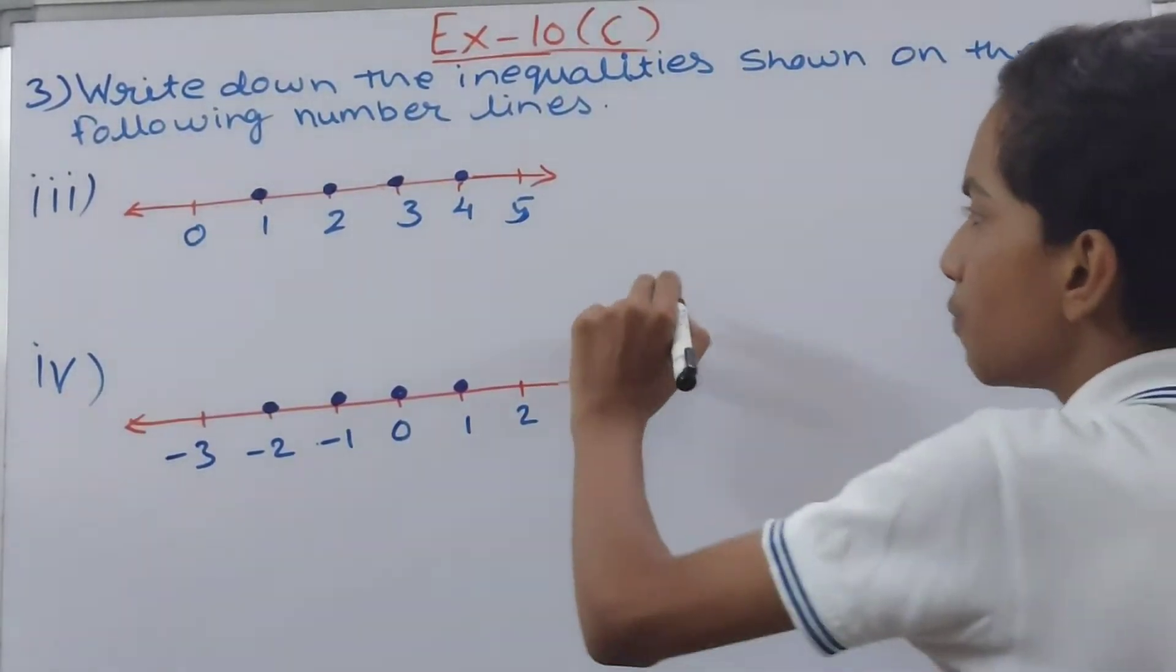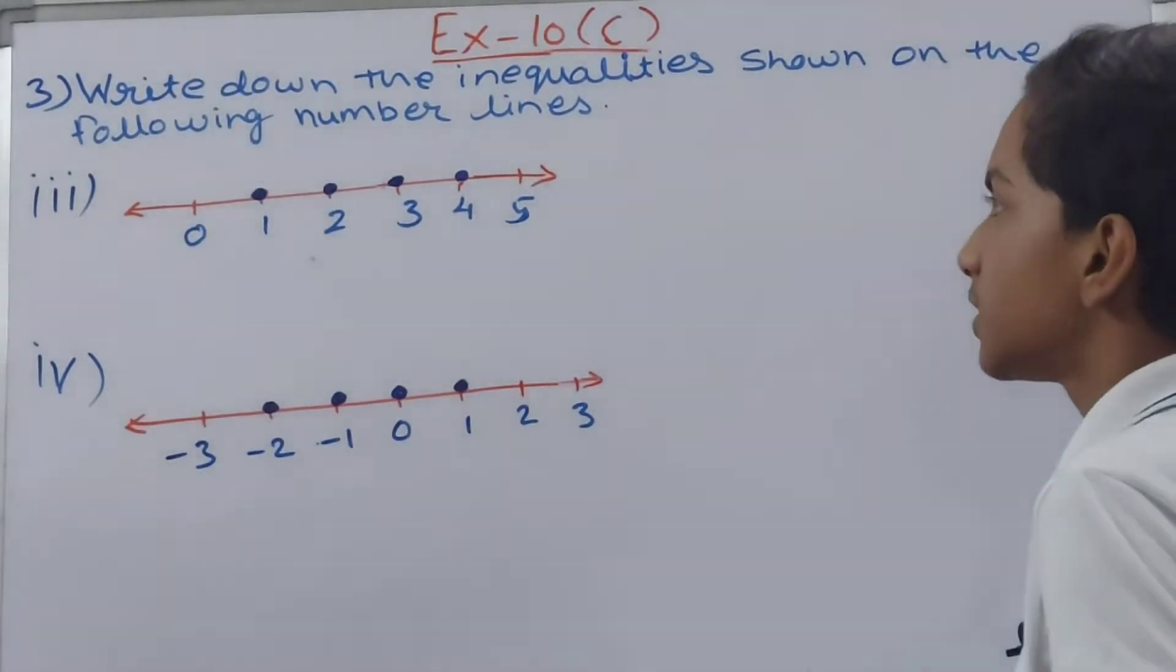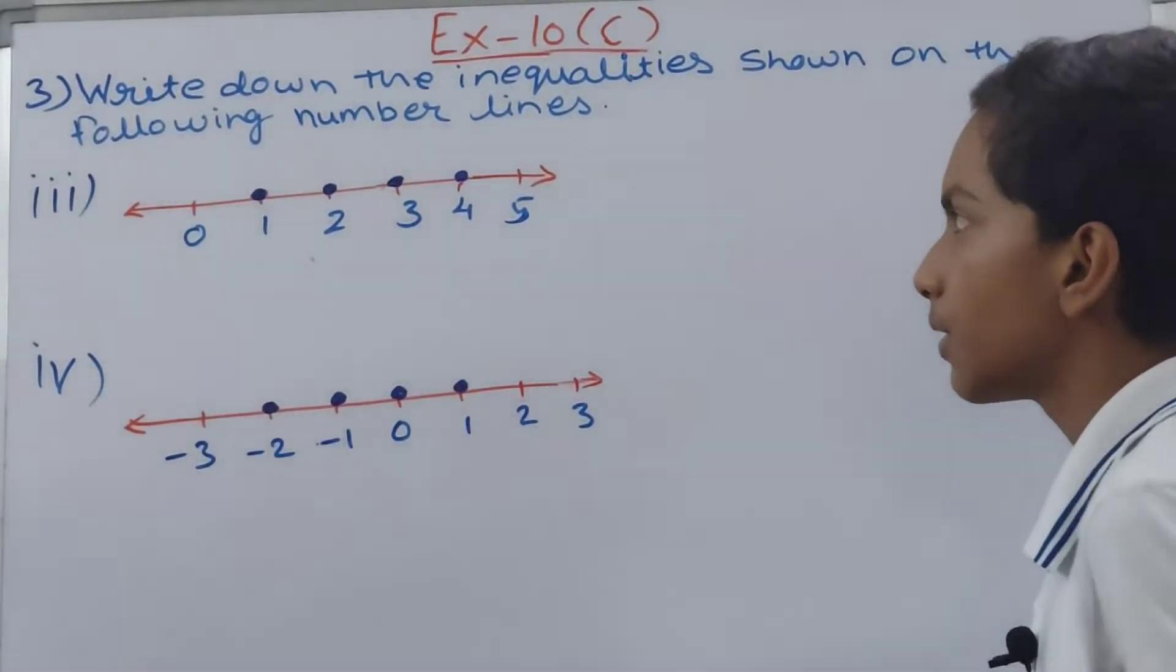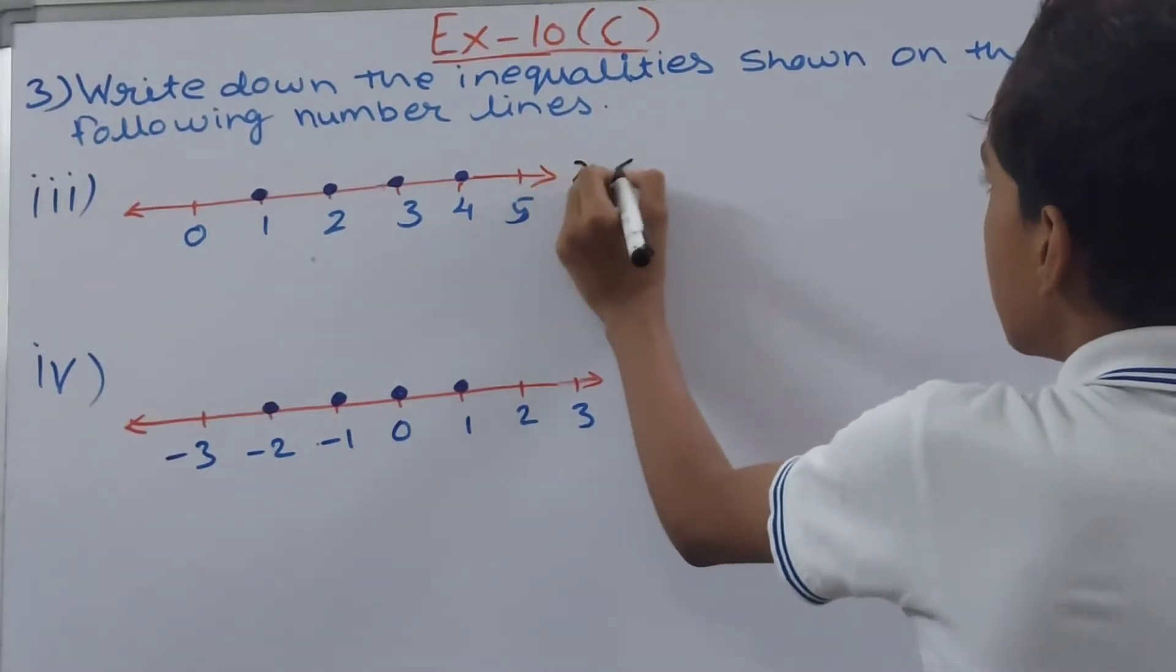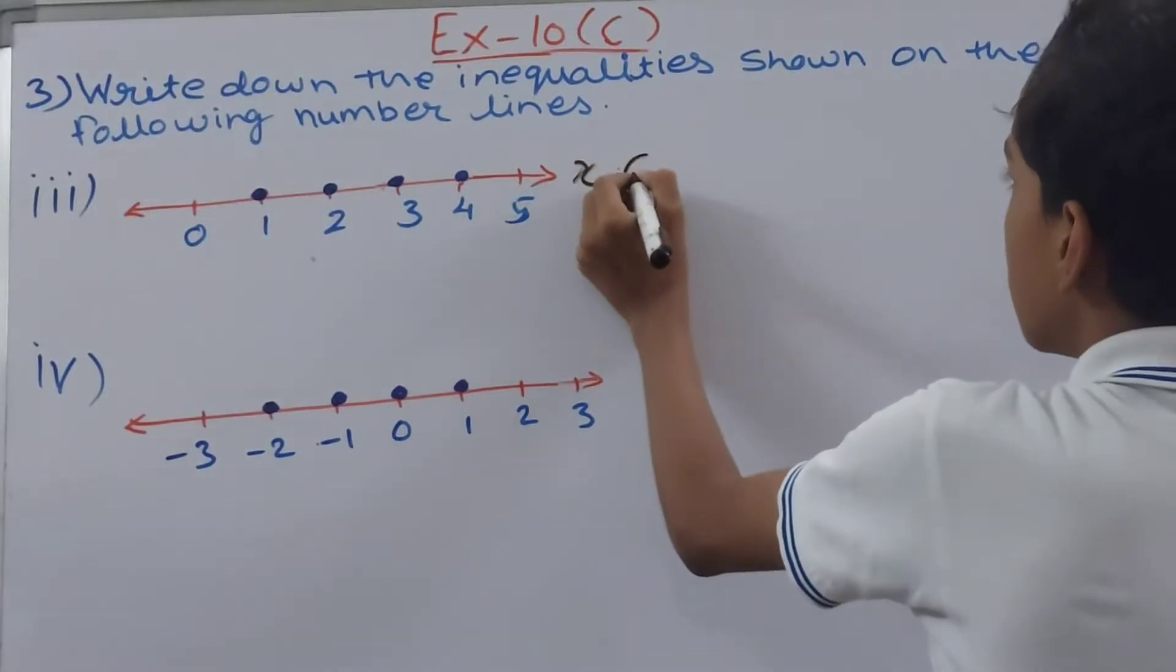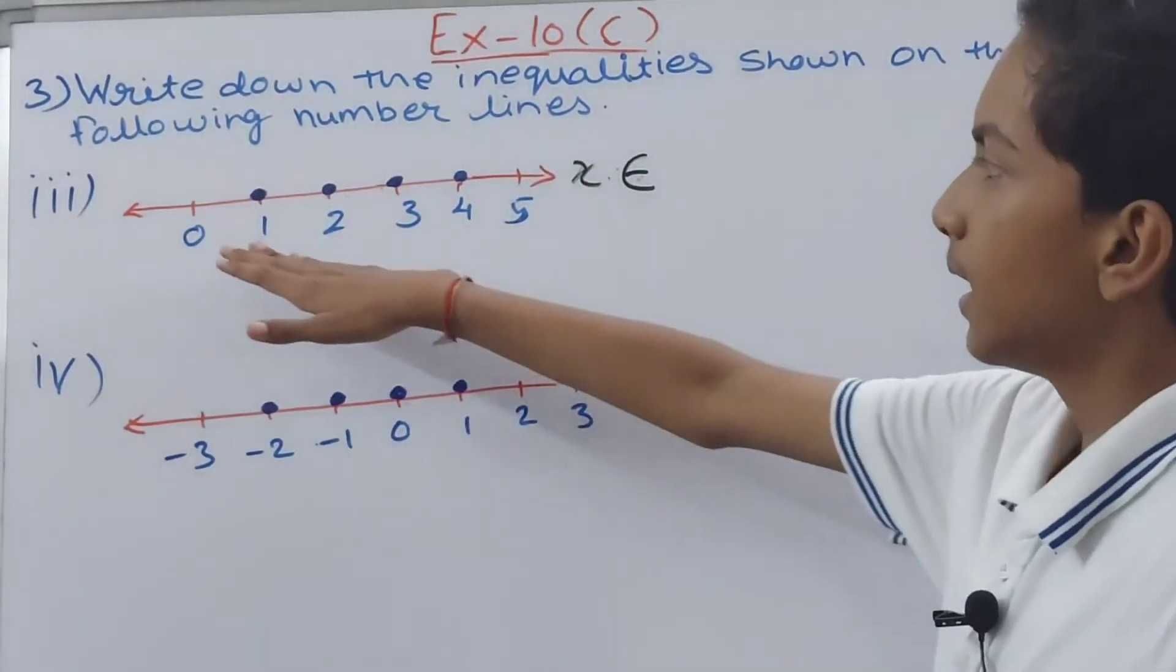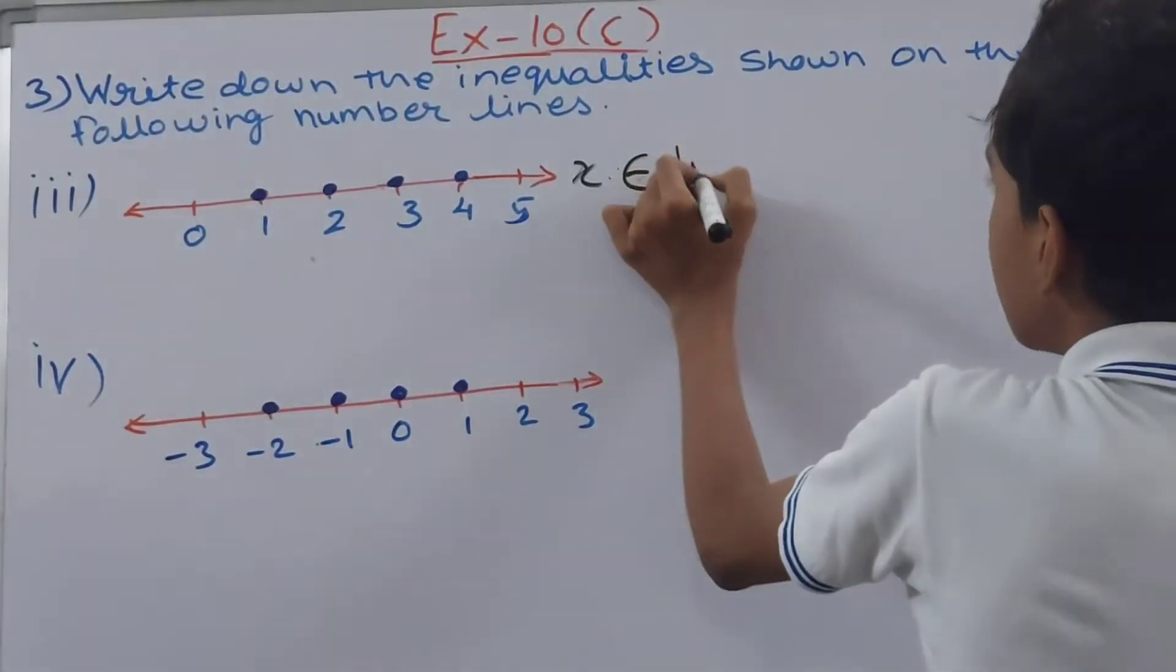Let us move on to the next part. Now on to the next part, this is third one. In this inequality you see 1, 2, 3, and 4, these are the highlighted numbers and we have to write the inequality. But before that you write x belongs to which set here. Sorry this is W, okay. X belongs to... you can see from 0 it is starting, our number line is starting from 0, so x belongs to whole numbers.